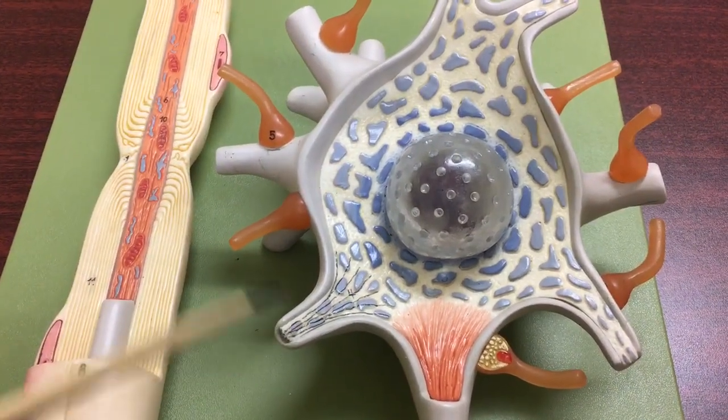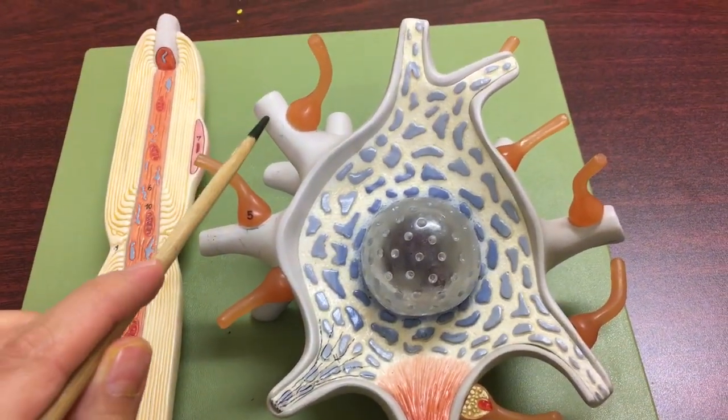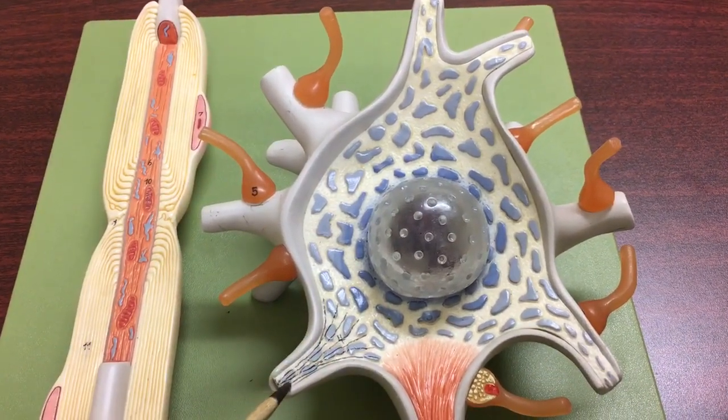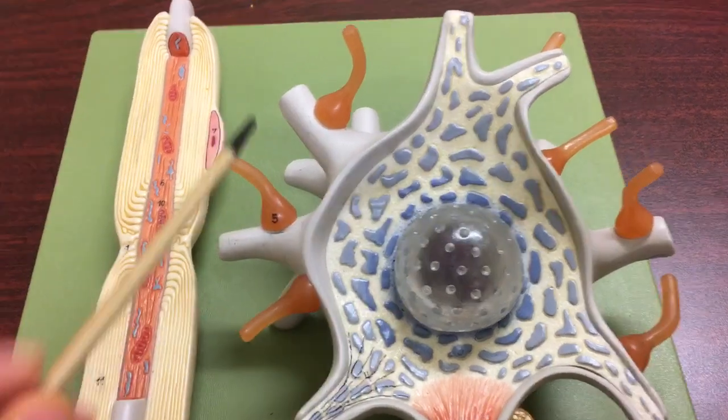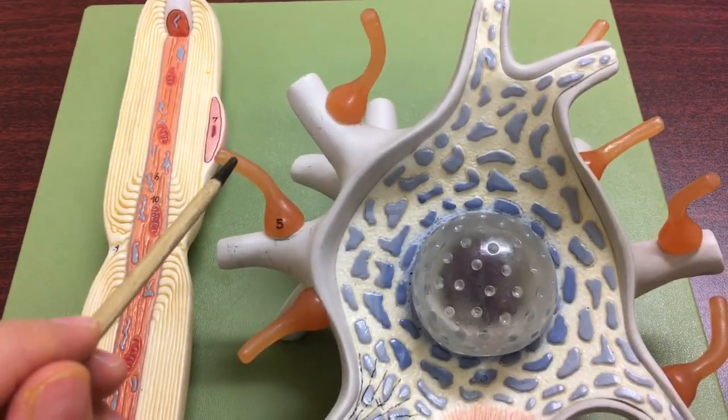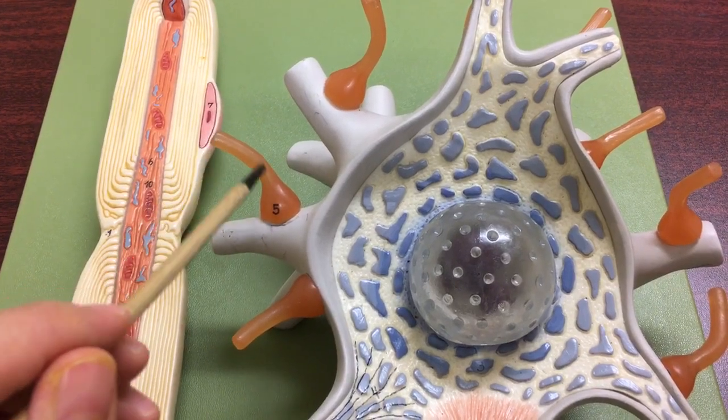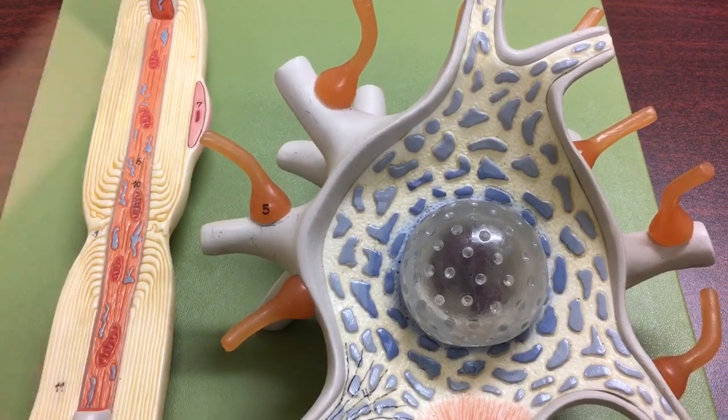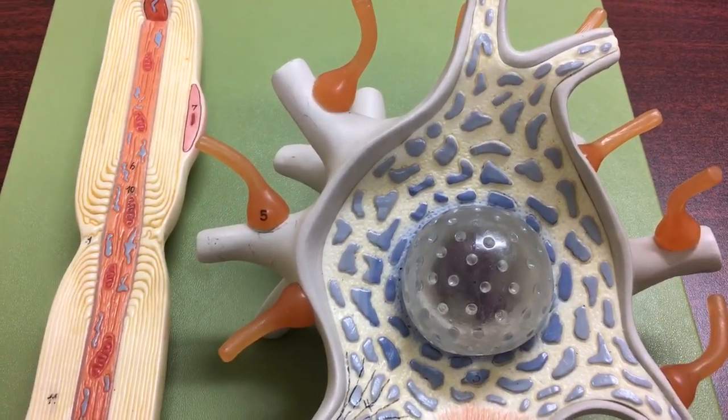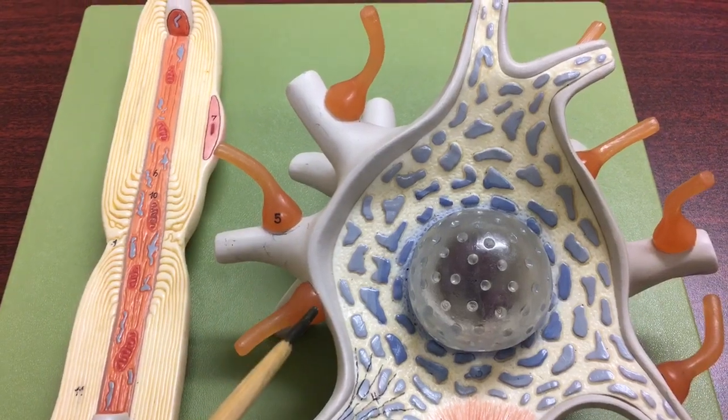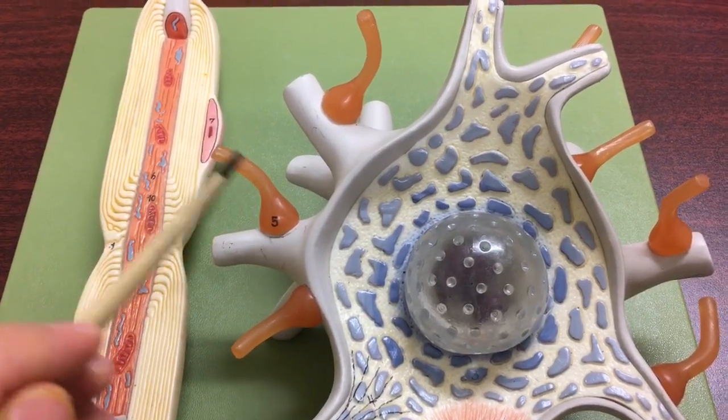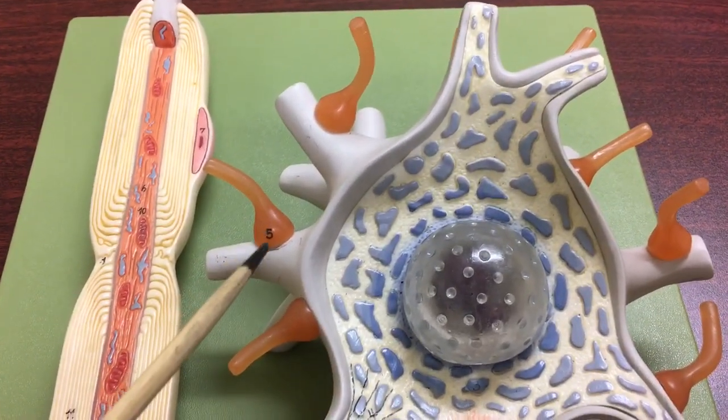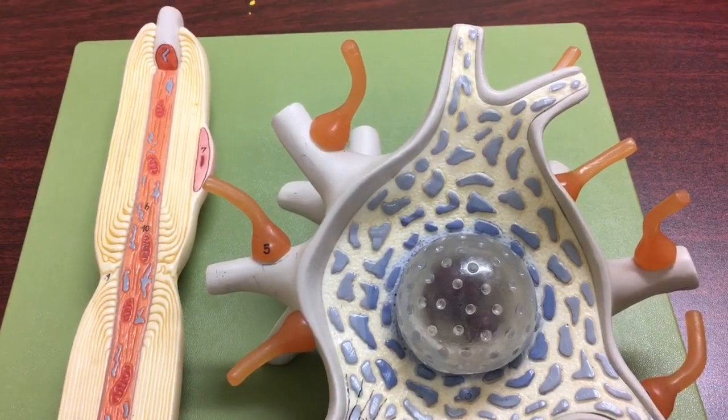These are the dendrites, basically some of the extensions of the cell body, and these are called telodendrites. These are actually the end portions or extensions of other neurons. Remember that neurons communicate with each other. This one probably belongs to one neuron, this belongs to another neuron, and they synapse so that they could communicate with one another.